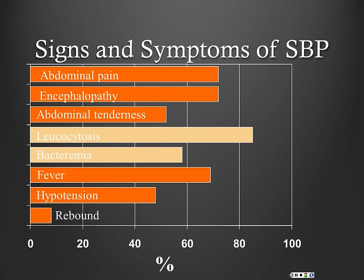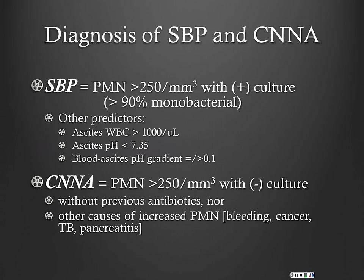Encephalopathy may be a presenting complaint. Leukocytosis is probably the most specific finding but is not always seen — neither is fever. Rebound is very rarely seen in SBP. We diagnose SBP if the PMN count is greater than 250, with 90% monomicrobial. Other predictors include serum WBC count and ascitic WBC greater than 1,000.